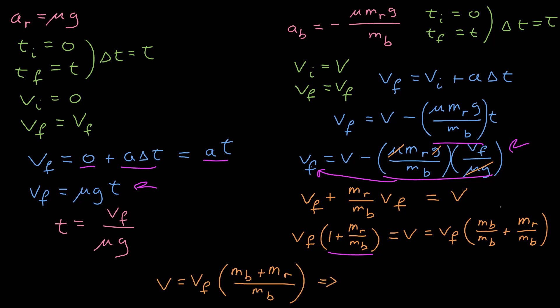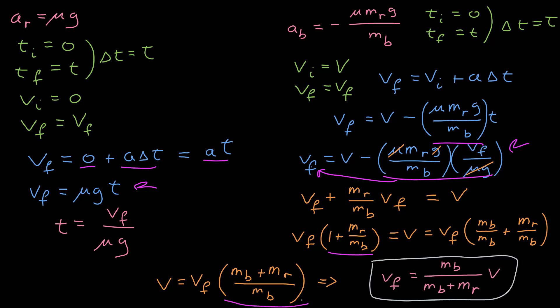So 1 turns into mass of b over mass of b, putting everything over the common denominator mass of b. Now solving for v final by dividing both sides by that term, I get v final is equal to mass of b divided by the total mass times the initial velocity.